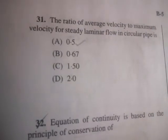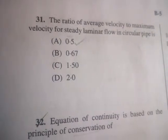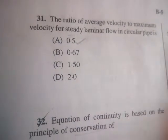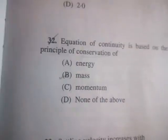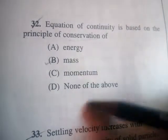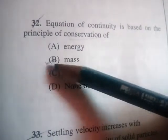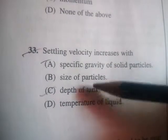Next question: the ratio of the average velocity to maximum velocity for a steady laminar flow in a circular pipe is A: 0.5. Next question: the equation of continuity is based on the principle of conservation of — energy, mass, or momentum? The correct answer is: mass.